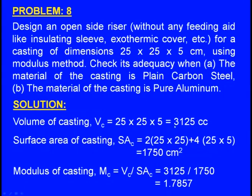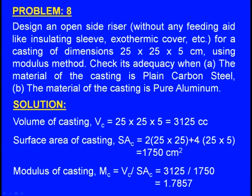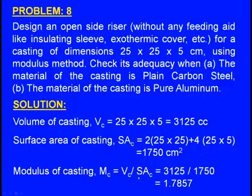Volume of the casting = 25 × 25 × 5 = 3125 cm³. Surface area of the casting = 25 × 25 × 4 = 1750 cm² (considering four such faces). Modulus of the casting Mc = Volume / Surface area = 3125 / 1750 = 1.7857. This is the modulus of the casting.